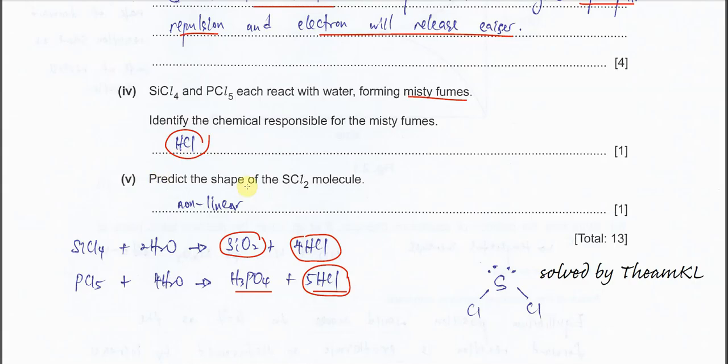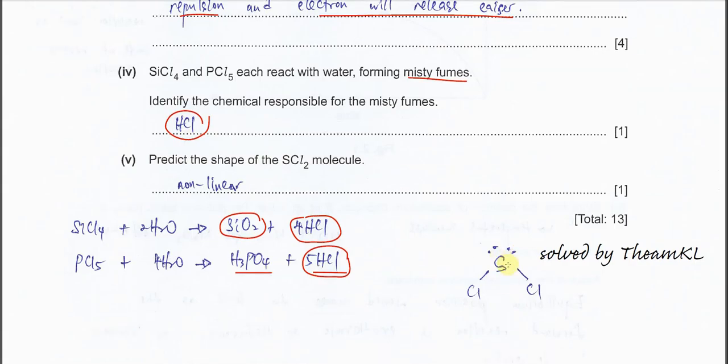Part 5. Predict the shape of the SCl2 molecule. Sulfur is group 16, so it forms one bond with two chlorine atoms. It has two lone pairs. Therefore, this is not going to be linear geometry. Central atom with two lone pairs and two bonding pairs. It's actually V-shape, but it's better to say non-linear rather than V-shape nowadays. Just put non-linear for this molecule.